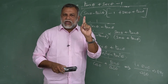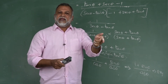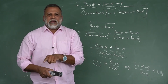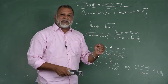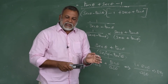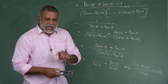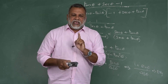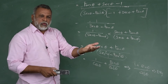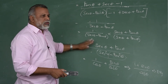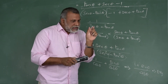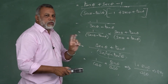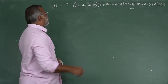Summary: In LHS, the '1' is replaced by the related identity. What '1' to replace depends on your convenience — either in the numerator or the denominator. Since tan and sec are given, you use the identity sec²θ - tan²θ = 1. Apply the method, watch the signs carefully when taking common factors, and you can prove the question in two ways.